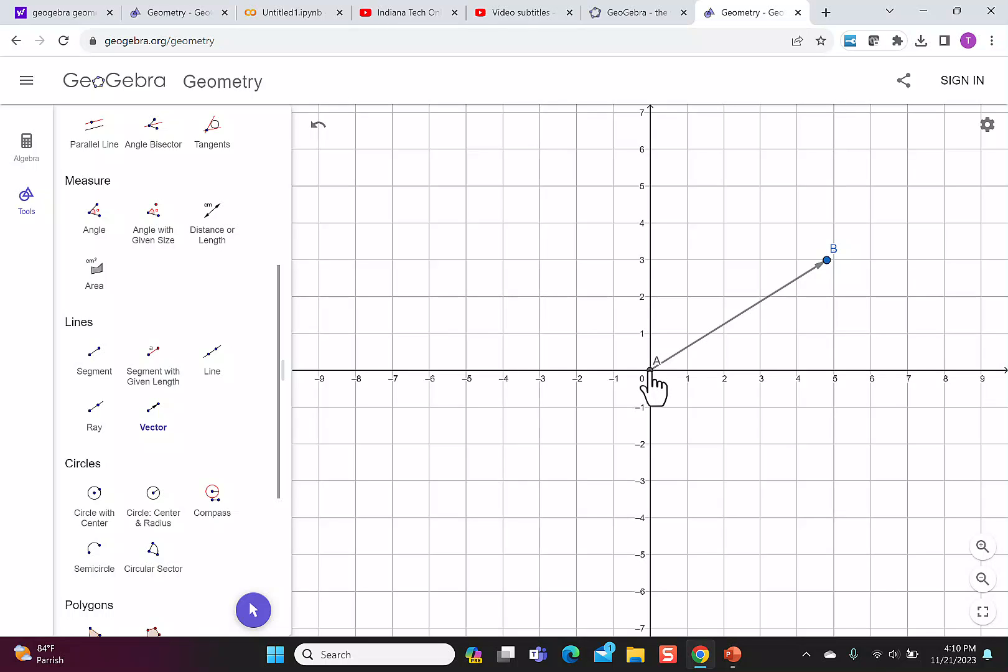Let's do a second vector, but again let's click on the origin and then just go somewhere else. If I want to see exactly what the points B, C, and A are,